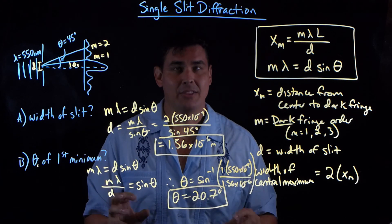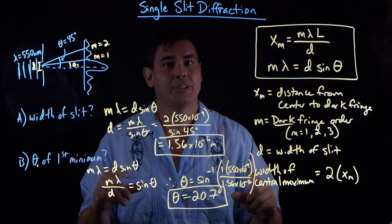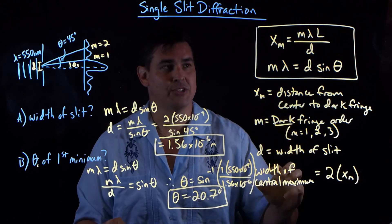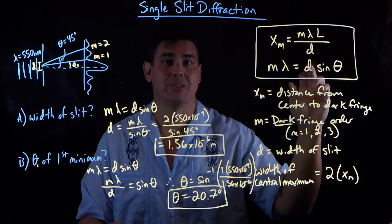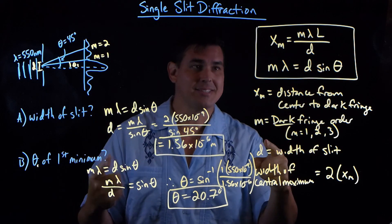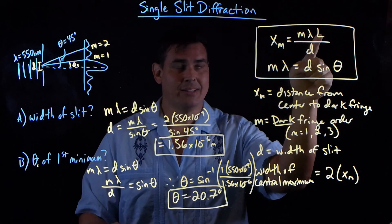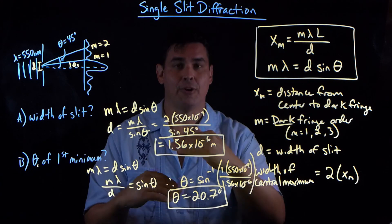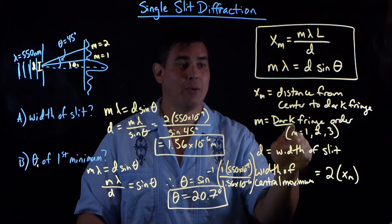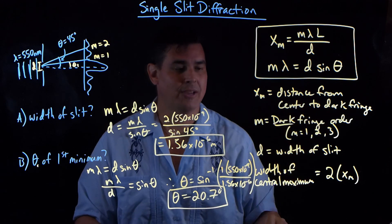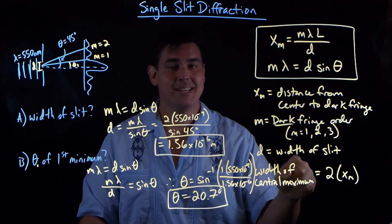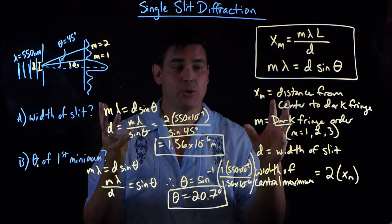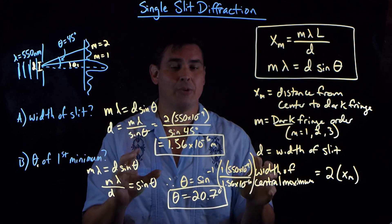Not too bad. The whole key with single-slit interference is that you're talking about dark fringes. The two equations are exactly the same. L is still the distance to the screen, xm is still measuring how far the fringes are — except now we're talking about dark fringes. And D is now not the distance between the slits but the width of the slit. If you can remember what everything means, solving them is pretty simple.